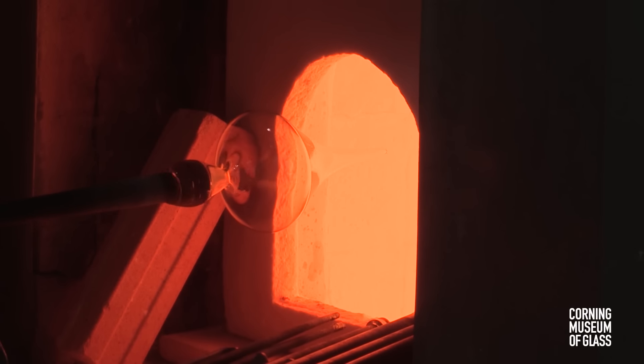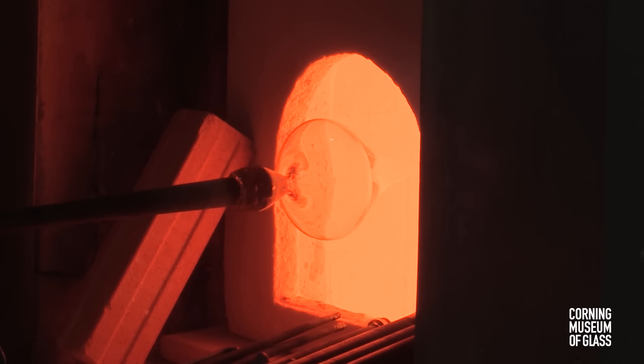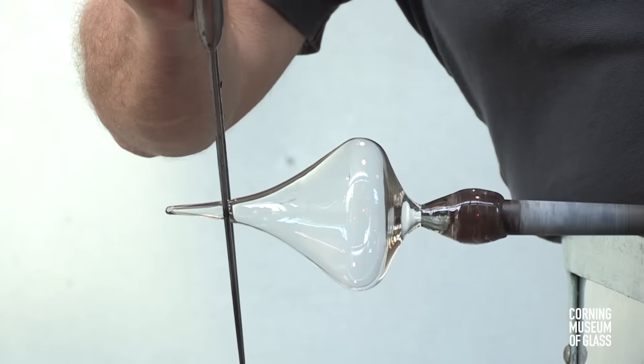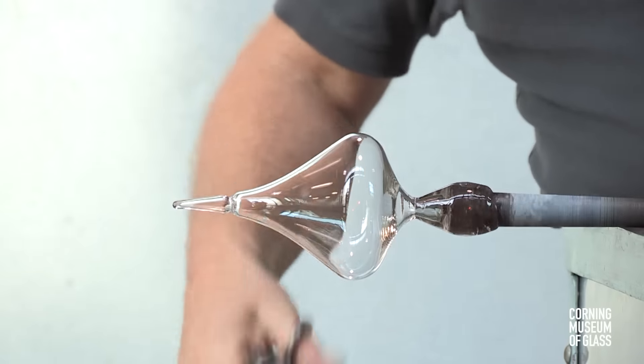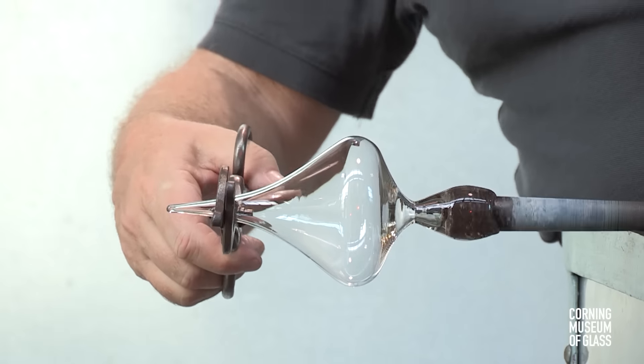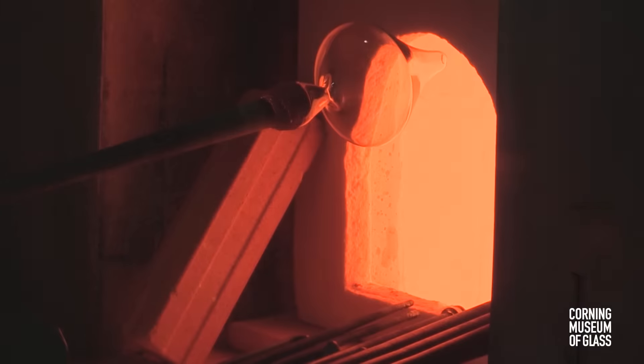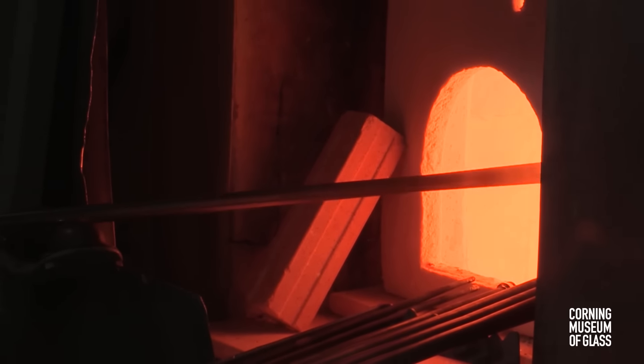The glass is very thin, cools quickly, and must be reheated frequently. The end of the bubble is trimmed, excess glass knocked off, and the tip of the bubble is reheated to make it perfectly flat.